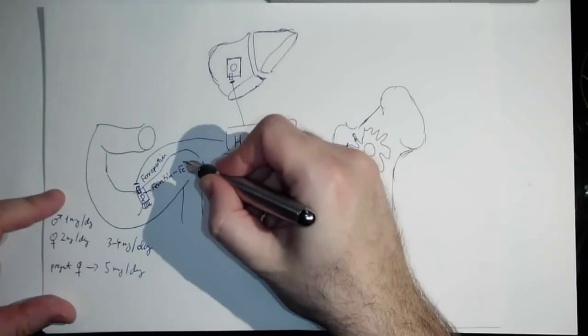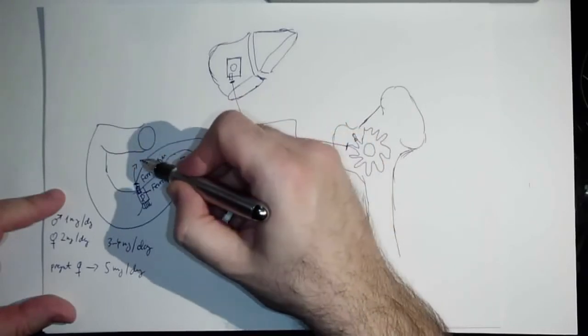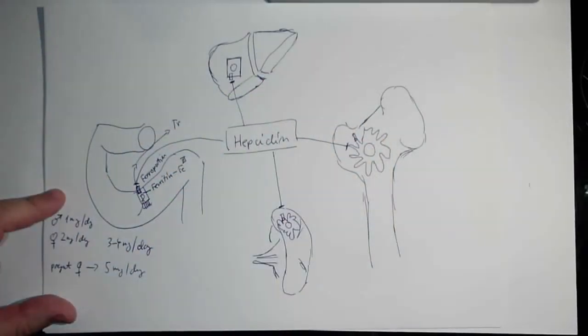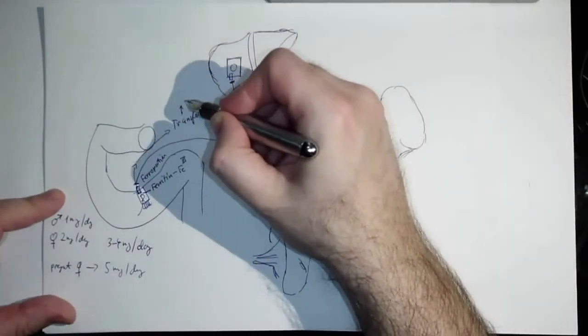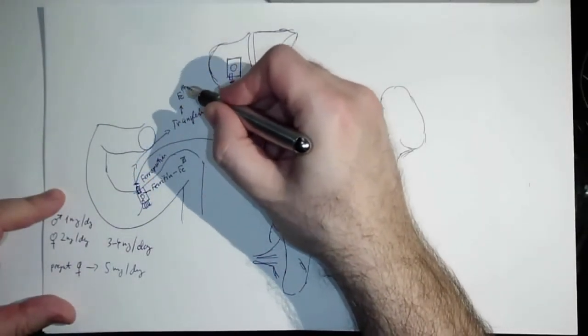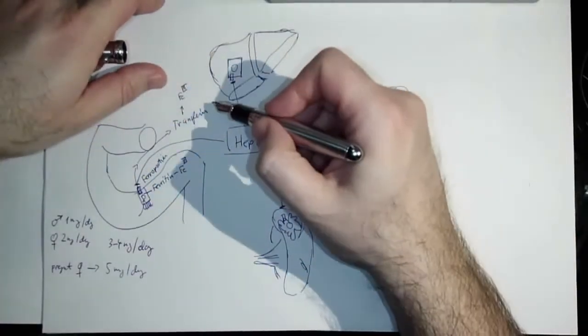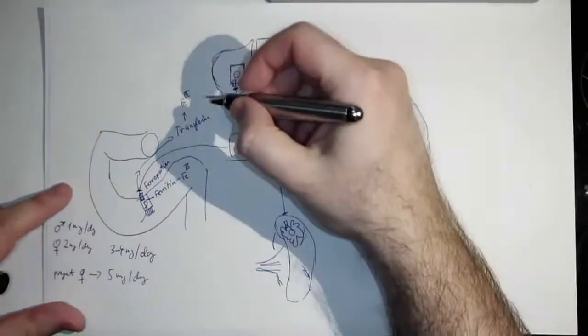Iron gets released from ferritin. Actually it's bound in the Fe3+ form and then it gets transported in the blood with transferrin, also with Fe3+ in this state. Transferrin brings the iron all around the body but especially to hepatocytes and also to bone.